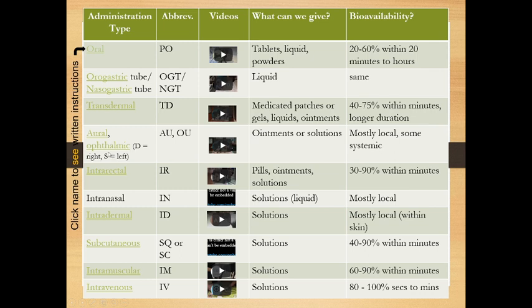Some abbreviations to know: 'otic' means ear and 'ophthalmic' means eye. The abbreviation AU means both ears; OU means both eyes — think 'U' as universal for both right and left. We change this to D or S: OD is the right eye, AS or OS is the left eye or ear. D stands for dexter and S stands for sinister — the Latin words for right and left.